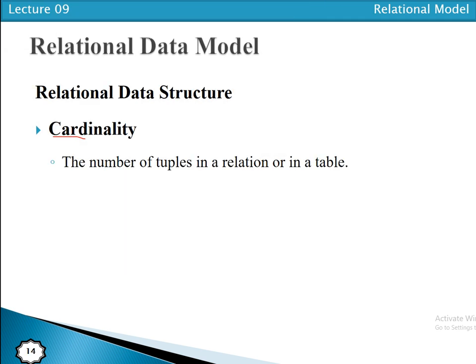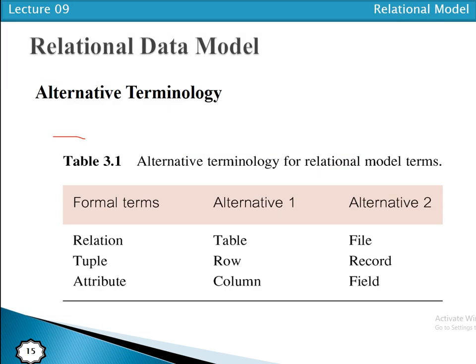We have different alternate terminologies: for relation we can use the words relation, table, or file. For tuple we can use row, record, or tuple. For attribute we can use column or field.